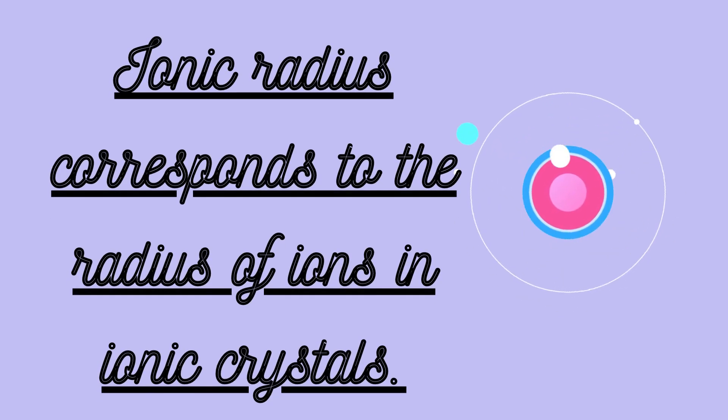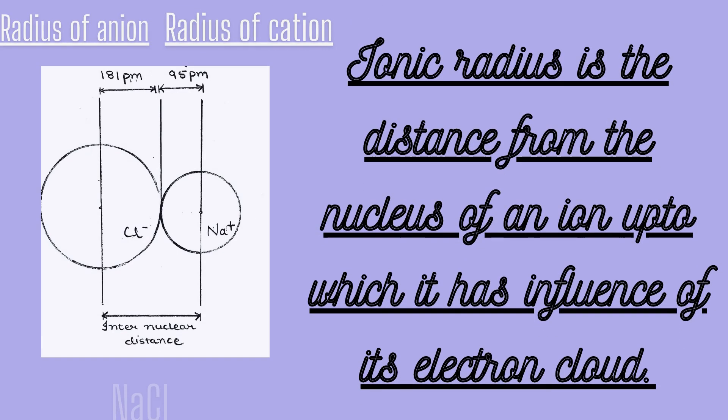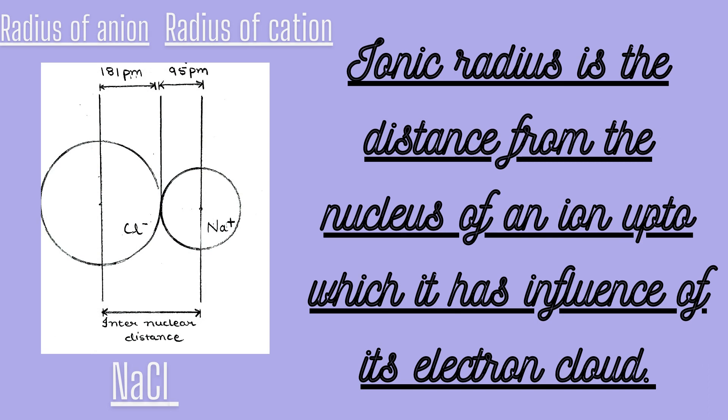Ionic radius corresponds to the radius of ions in ionic crystals. Ionic radius is the distance from the nucleus of an ion up to which it has influence of its electron cloud. As you can see in the example, NaCl is an ionic crystal. Radius of cation Na+ is 95 picometer and radius of anion Cl- is 181 picometer.